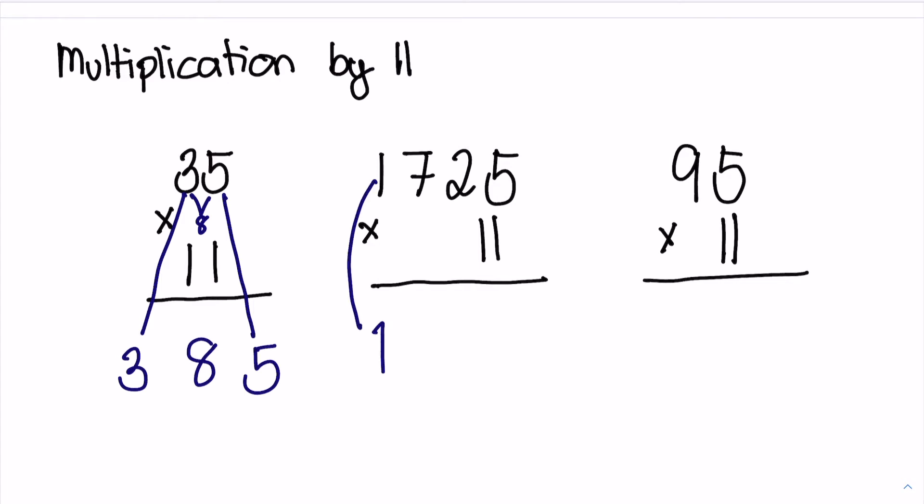Let's have another one. 1, copy 1, copy 5, and then you add 1 plus 7, that's 8. 7 plus 2, that's 9, and 2 plus 5, that's 7. And this is the answer.